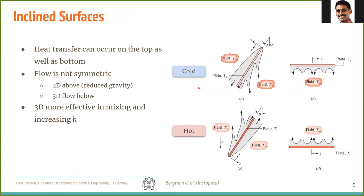Now let us look at some other phenomena that occur in natural convection which might be quite non-intuitive at first. Firstly, let's look at inclined surfaces. We previously considered a vertical hot surface where the boundary layer was developing. Now suppose you have a plate with two sides and you incline it — what happens in this case?